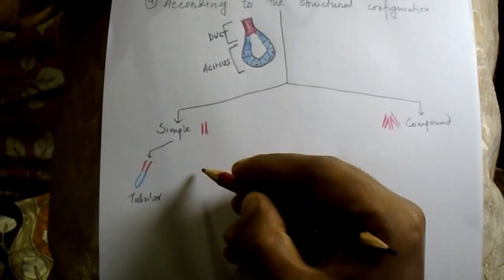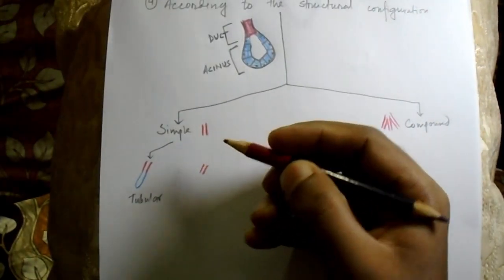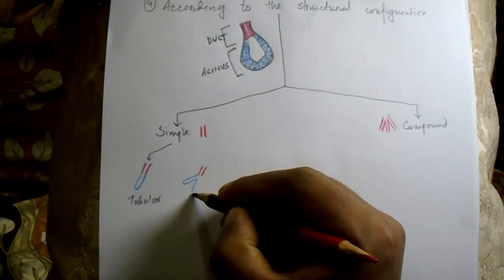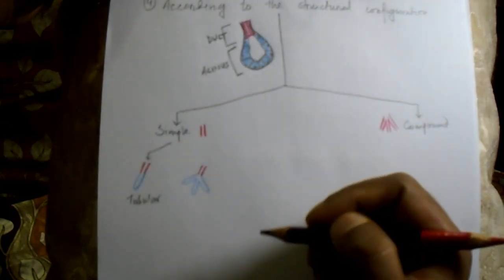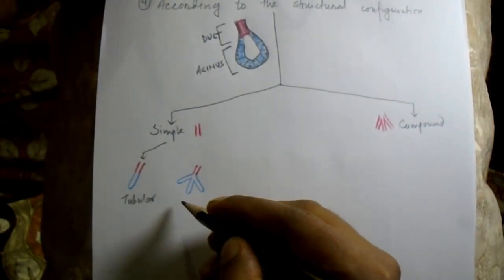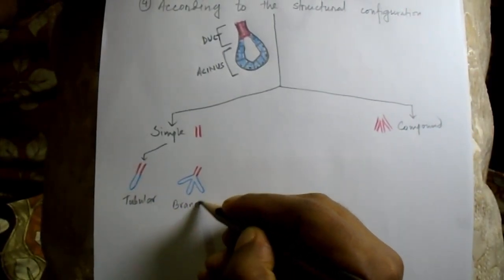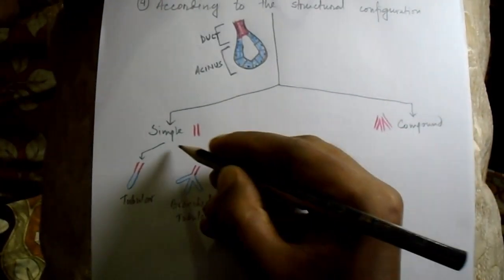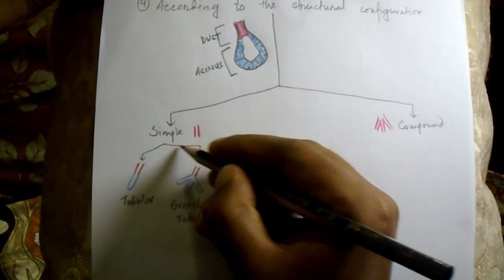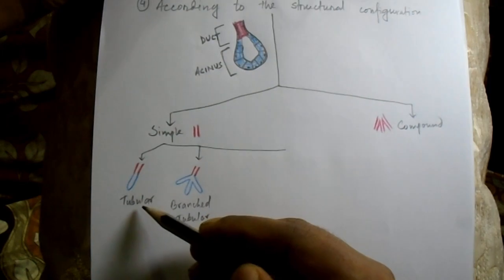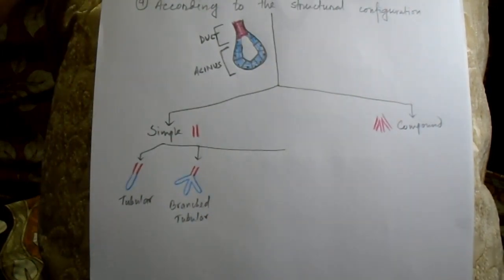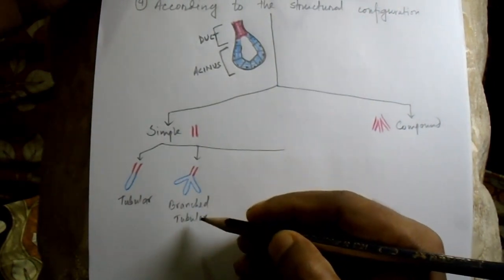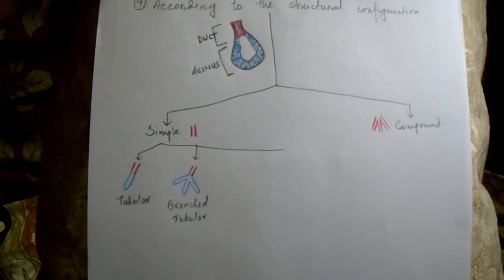The next subtype has a single unbranched duct, the secretory part is tubular in shape, but branching is present in the secretory part. This is termed the branched tubular gland — read as simple branched tubular gland. The simple tubular gland is present in the mucous glands of the colon and intestinal glands, while the branched tubular gland is present in the stomach and uterus.